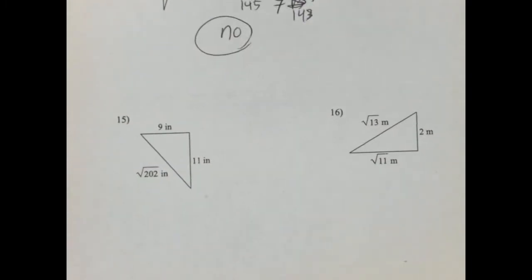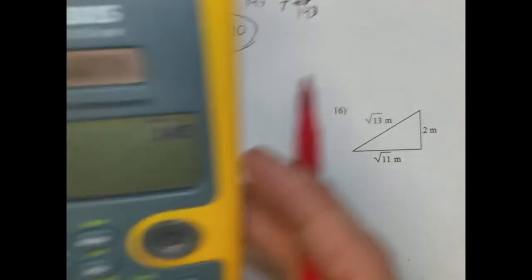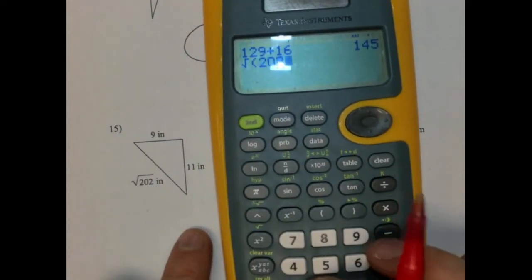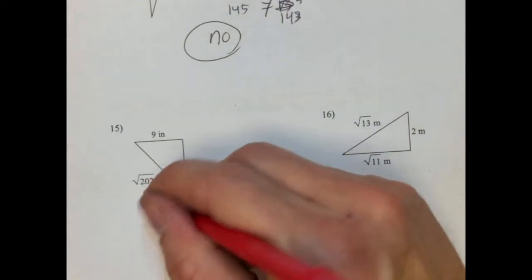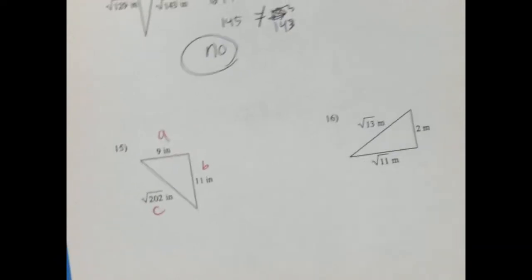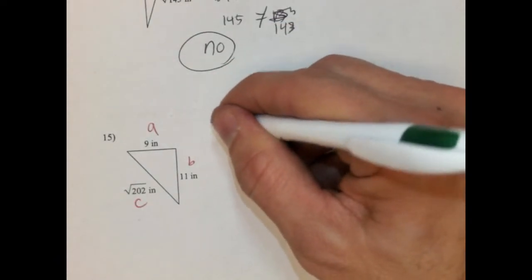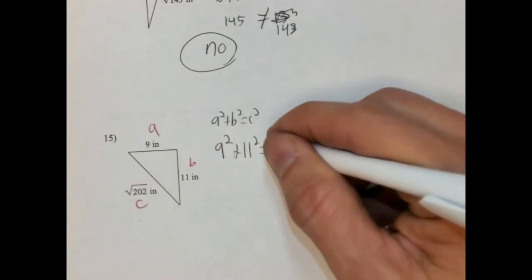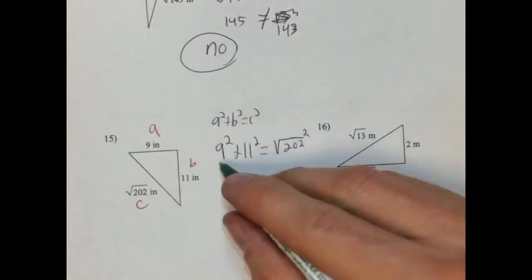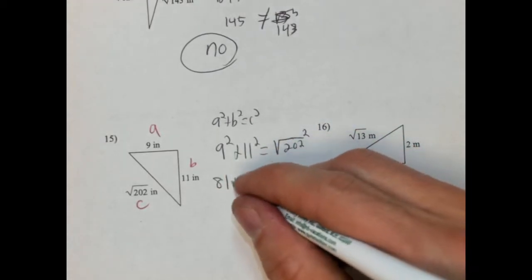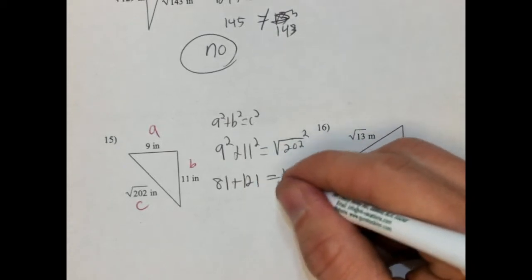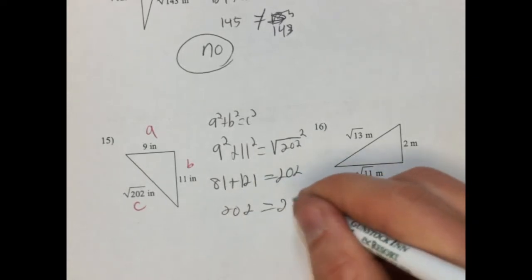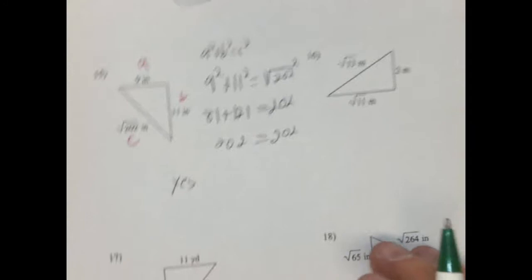Okay, let's try 15. Again, this is the largest side because radical 202, we get 14.10. So this is our C, our A, and our B. So we're going to go A squared plus B squared equals C squared. So 9 squared plus 11 squared equals radical 202 squared. 9 squared is 81, 11 squared is 121, and this would be 202. Add these together, we're going to get 202. So it actually is a right triangle. Say yes.